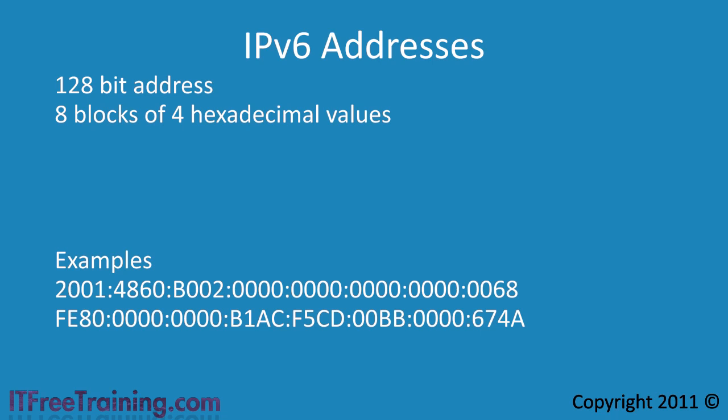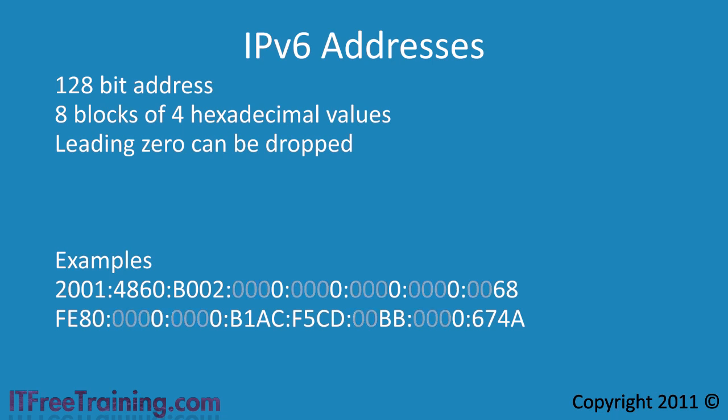To make the addresses easier to read, there are some rules that you can use to reduce the size of the address. First, you can remove any leading zeros down to a single number. Given this example, all the leading zeros can be removed from the groups of 4 digits. Removing the leading zeros makes the address a little easier to read. Note that you cannot remove all zeros — there always needs to be at least 1 digit in each group of 4.